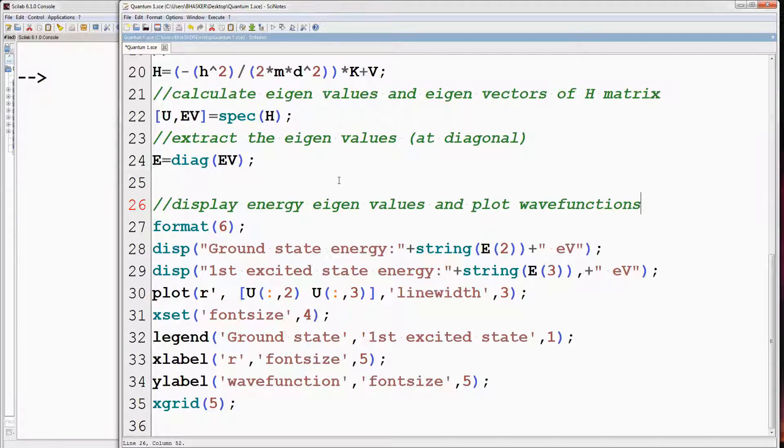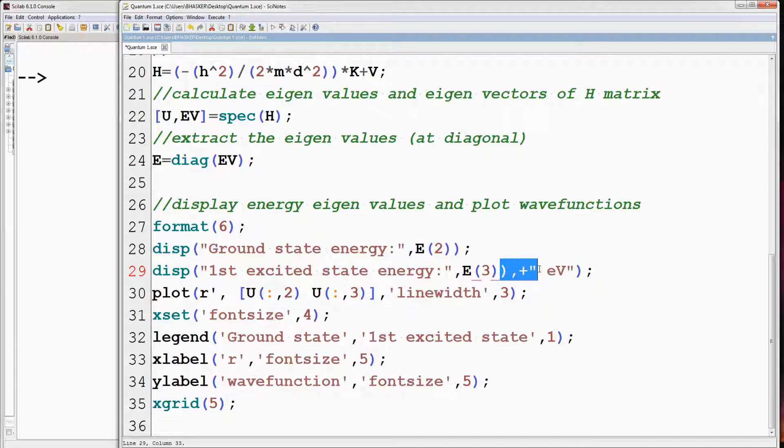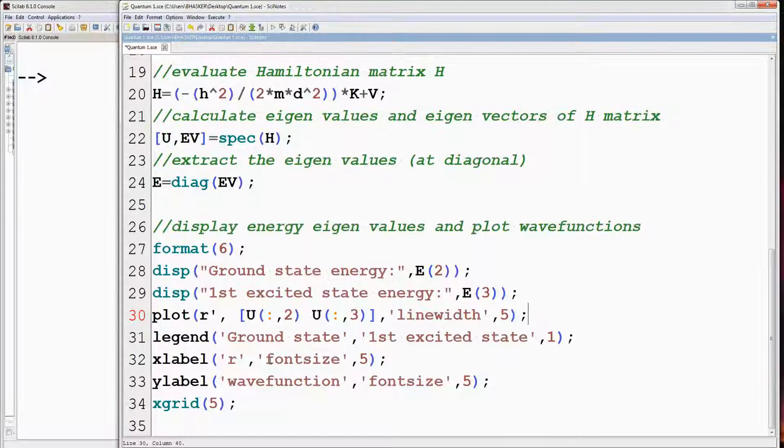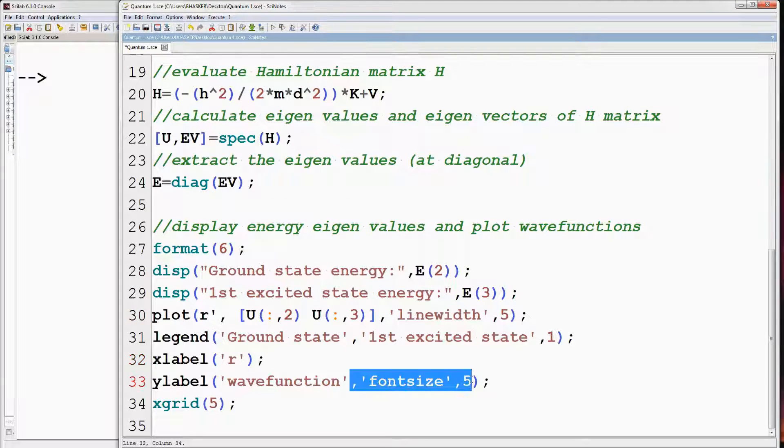Now we are removing some features that we added so that results and graphs look better. Some of those features might not work here since we are using different version of Scilab here, 6.1.0. So first remove this string feature. We will set the line width of the plot to 5. Remove X set, also this font size feature of the x and y labels. We don't want grid also.